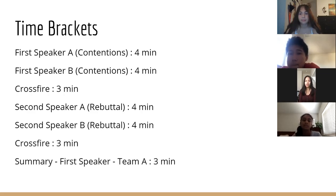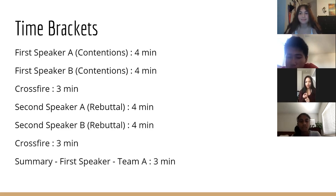The time brackets are the setup for how long you're given to speak. The first speaker presents all contentions — basically all the points supporting your assigned side — and is given four minutes. Then the person on the other team is given four minutes. After that, crossfire is three minutes. Crossfire is a one-on-one where you're able to ask each other questions — clarifying questions or questions to prove them wrong.